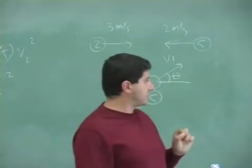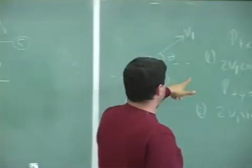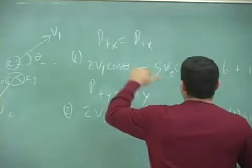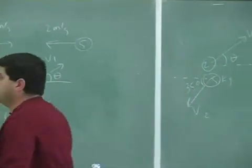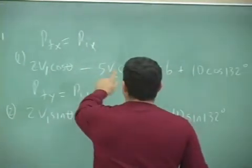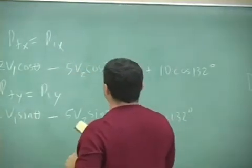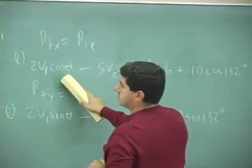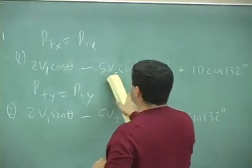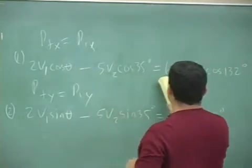the reason that makes it a little easier is because here when we're getting to the momentum, what happens is two V one cos theta minus five V two. What happens here? Two V one cos theta minus five V two cos 35, that's still the same. I mean, this one is what,